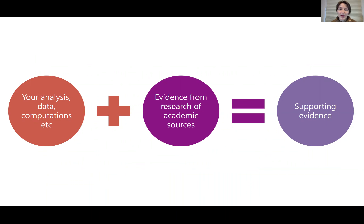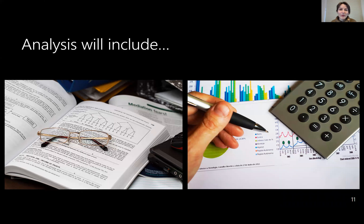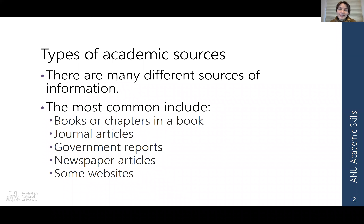The evidence you use in a paragraph can be made up of your analysis, the data, the computations you've made, as well as the academic sources you've consulted. Your lecturer might give you a scenario, particular reports, or data sets to focus on. They might also expect you to do some research of your own, consulting academic journal articles or finding industry reports to analyse. Make sure that the academic sources you use are reliable, and check out the ANU library's advice on evaluating sources to help you find good sources.